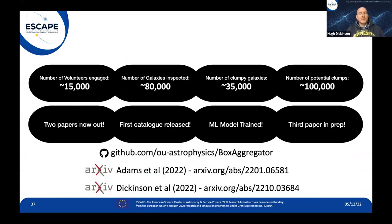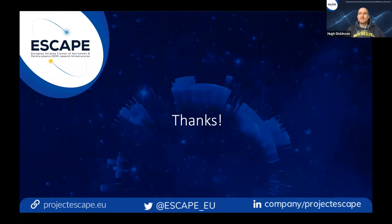The final numbers from Galaxy Zoo Clump Scout: 15,000 volunteers, 80,000 galaxies, 35,000 clumpy galaxies found, 100,000 potential clumps catalogued. There are already two scientific papers out, the first catalogue has been released, the machine learning model has been trained, and a third paper is in preparation. One thing I want to make clear: citizen science is not just an outreach tool — it's a tool for doing real scientific analysis that produces publishable research. Thank you for listening.